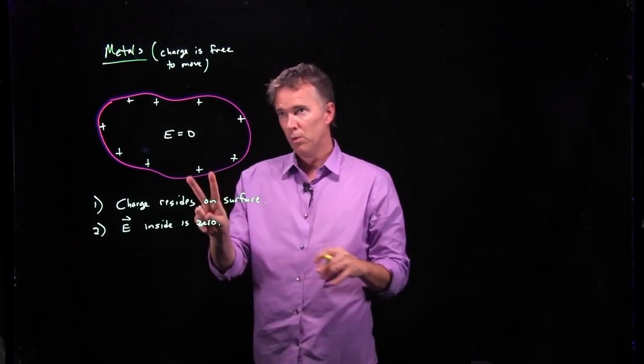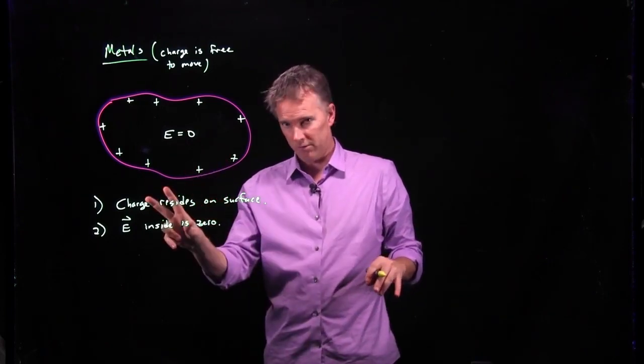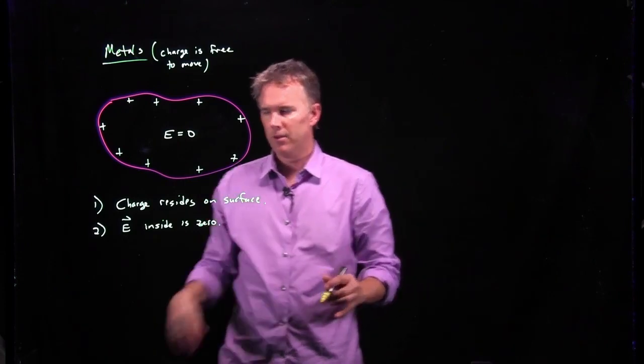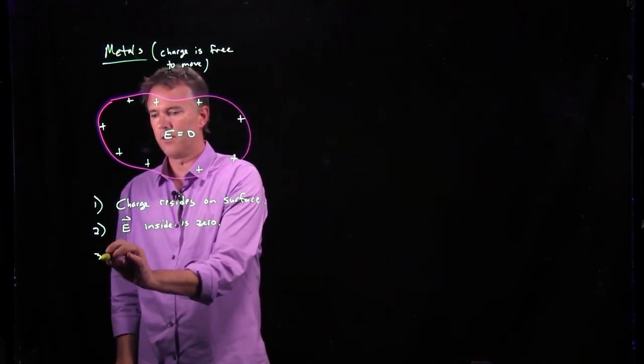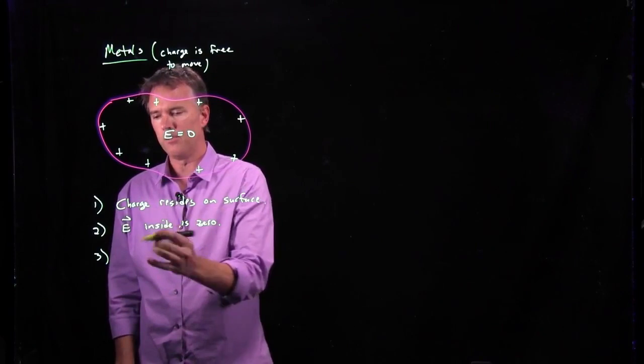All right, so we've got two rules about metals, conductors so far. Charge resides on the surface. The E field inside is zero.